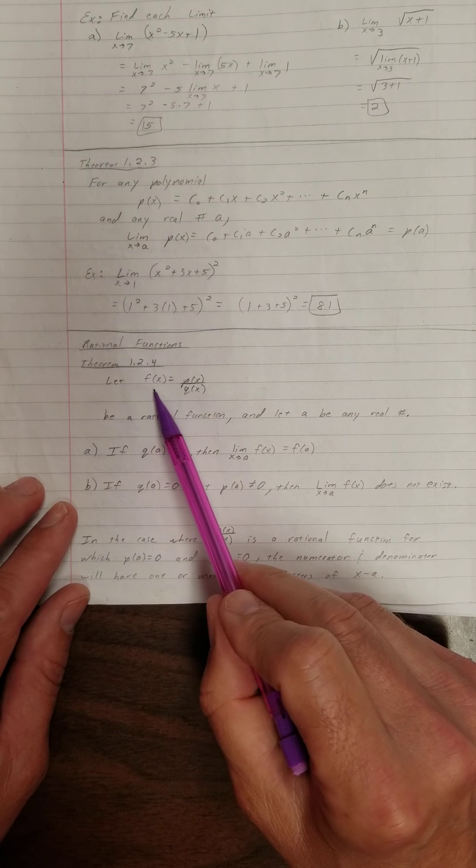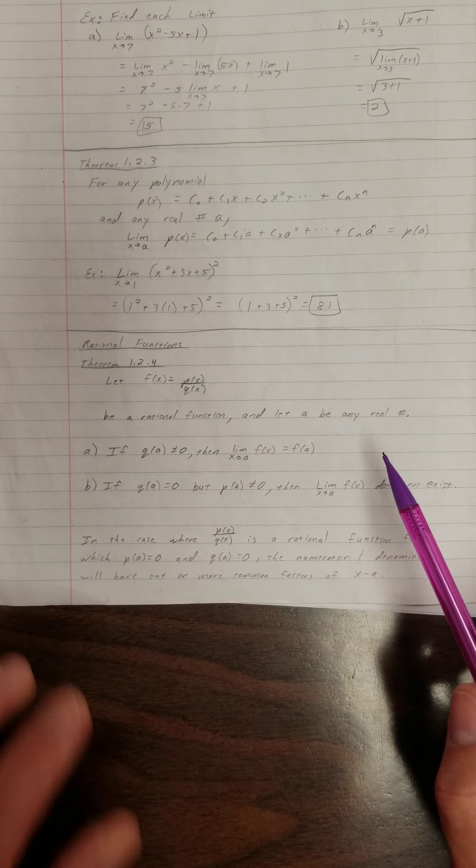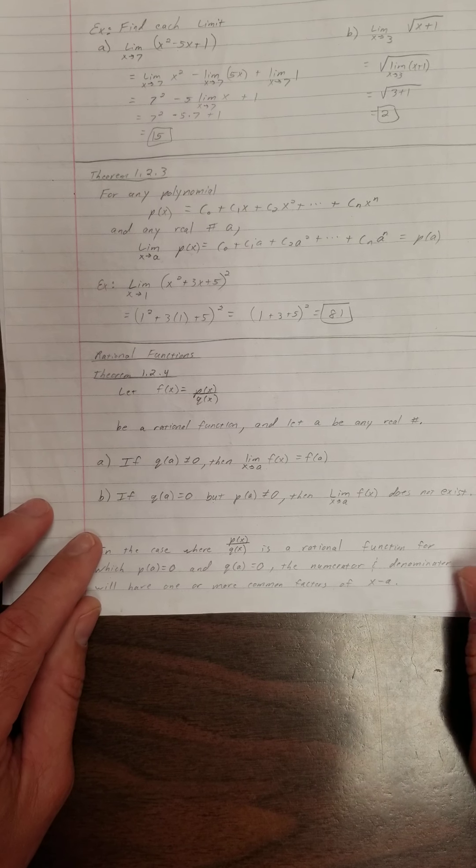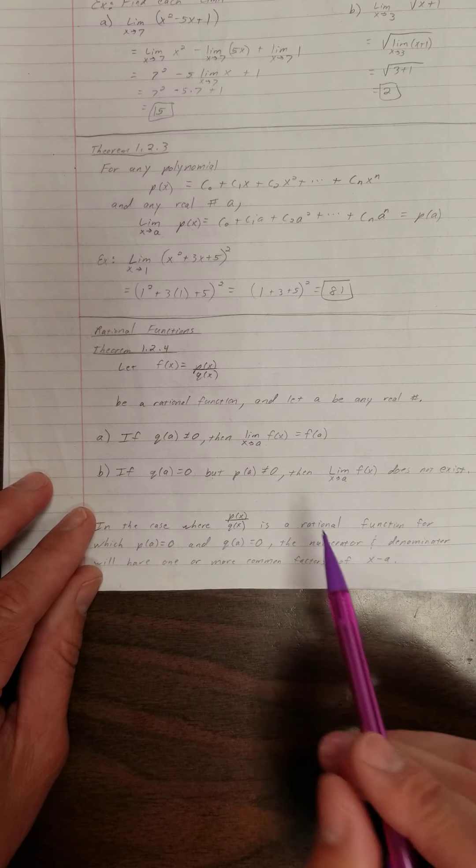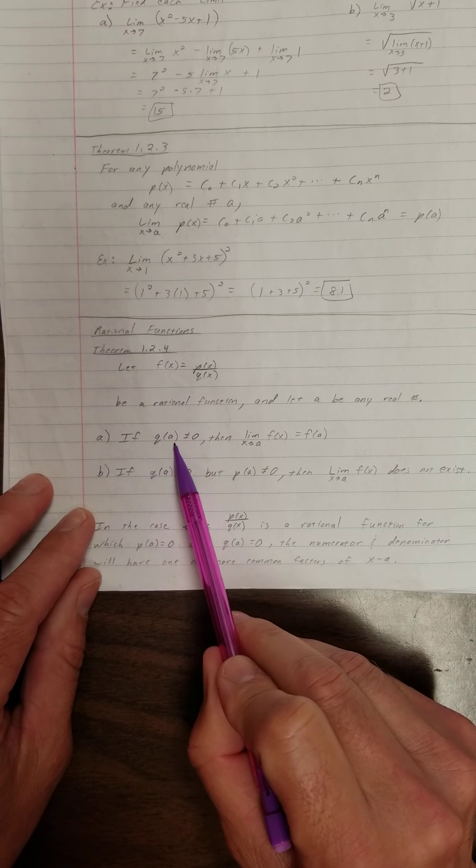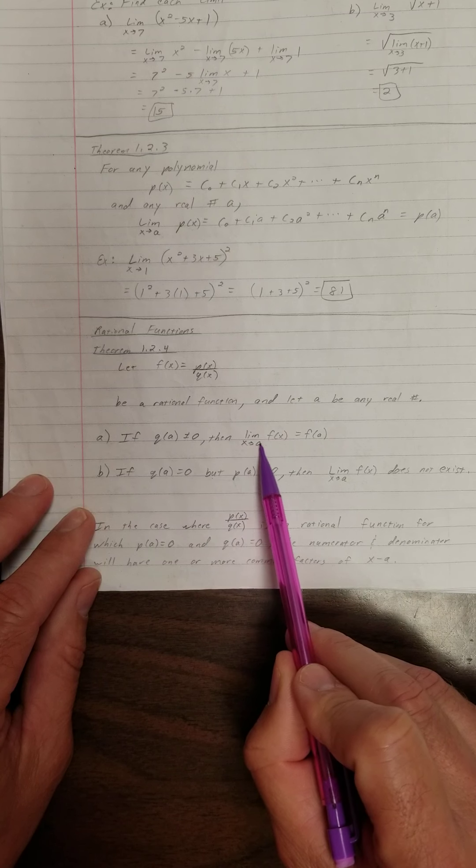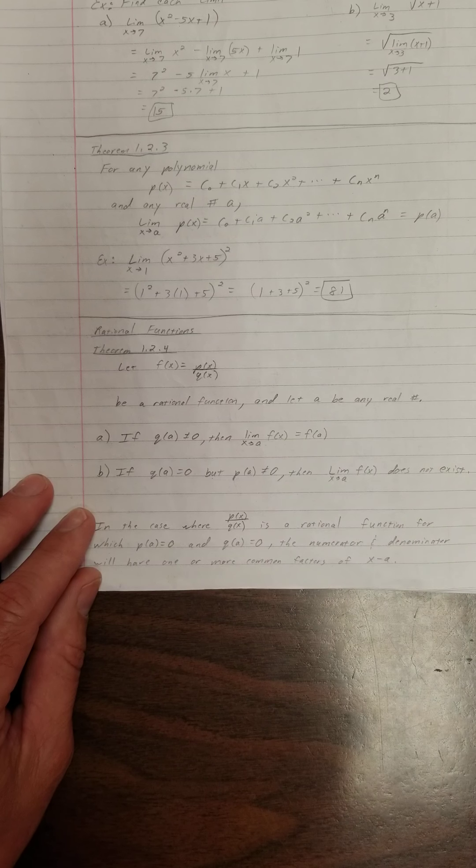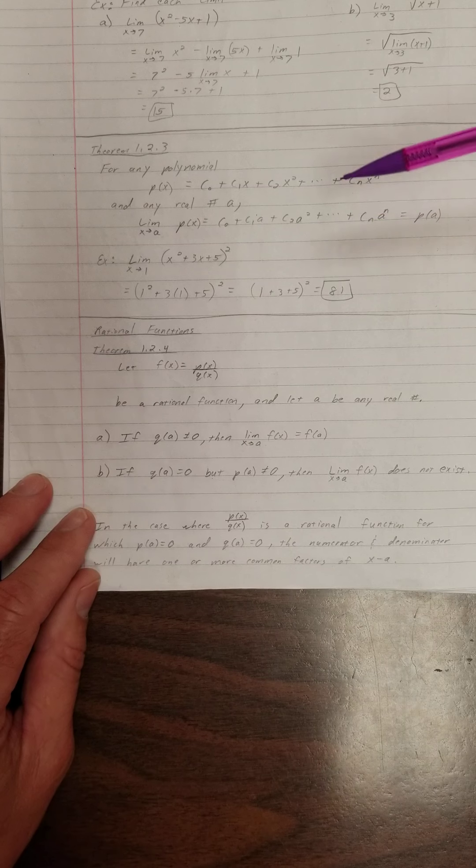Alright, this theorem says let f of x be a rational function, and let a be any real number. Then what it goes on to say is, if q of a is not equal to 0, then the limit as x approaches a of f of x is equal to f of a.